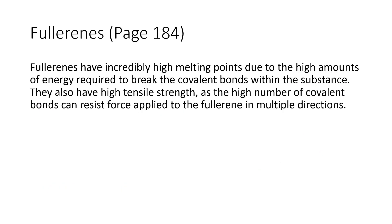Fullerene has incredibly high melting points due to the high amounts of energy required to break the covalent bonds within the substance. It also has high tensile strength, as the high number of covalent bonds can resist force applied in multiple directions. Each carbon allotrope has carbon bonded through covalent bonds, which is why diamond, graphite, and fullerene all have relatively high melting and boiling points.